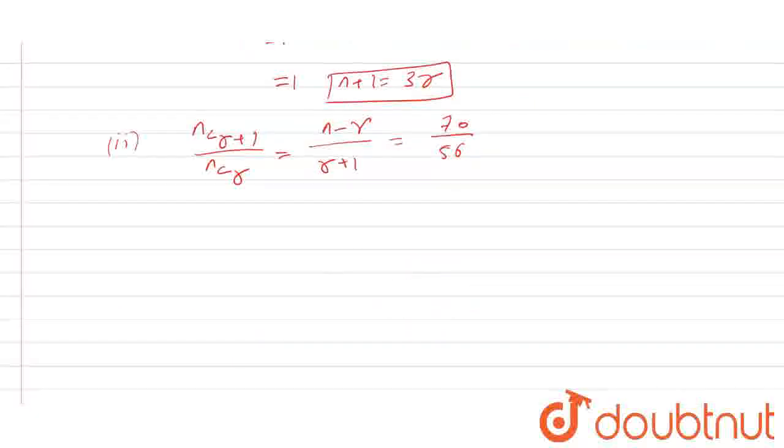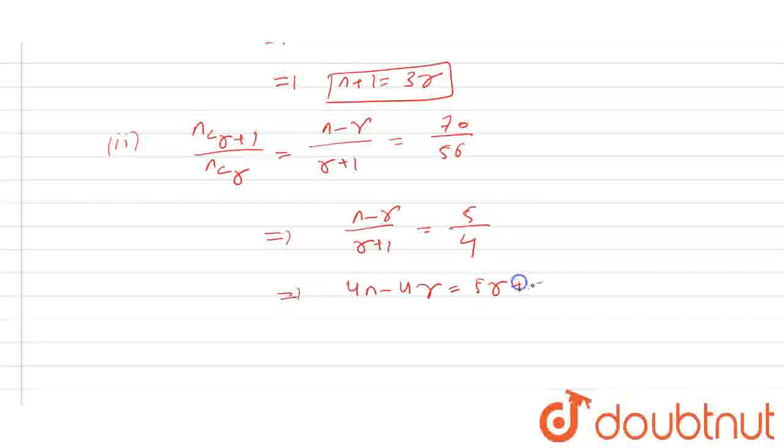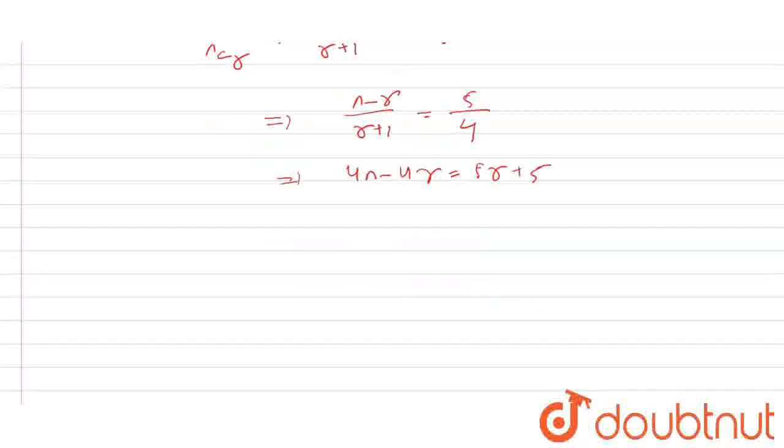Now, this will be solved, so (n-r) / (r+1) = 5/4. This gives 4n - 4r = 5r + 5. This simplifies to 4n - 5 = 9r.